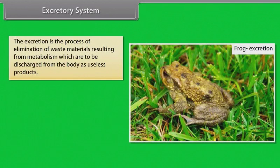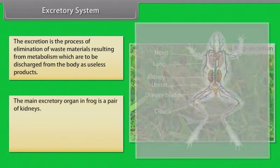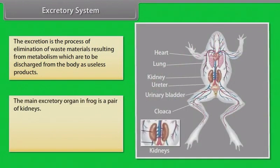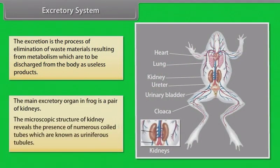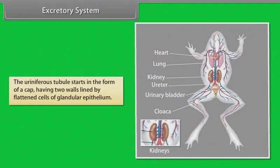Excretion is the process of elimination of waste materials resulting from metabolism. The main excretory organ in frog is a pair of kidneys. The microscopic structure of the kidney reveals numerous coiled tubes known as uriniferous tubules. These tubules start in the form of a cap having two walls lined by flattened cells of granular epithelium.